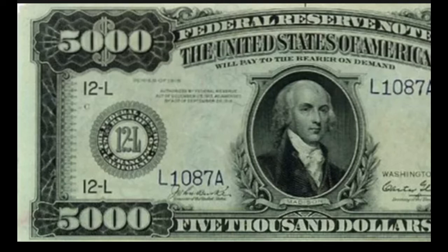Fun fact seven: hidden faces can be seen when holding US bills up to light, as part of a counterfeit prevention measure. Fun fact eight: US bills have threads that glow in UV light. The five dollar bill glows blue, the ten dollar bill glows orange, the twenty dollar bill glows green, the fifty dollar bill glows yellow, and the hundred dollar bill glows pink in UV light. Fun fact nine: the Secret Service actually investigates counterfeit notes. Fun fact ten: 70 percent of new bills replace worn-out bills.